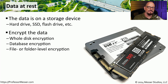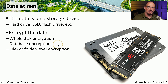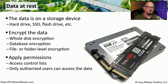Different types of data at rest encryption include encrypting the entire disk using full disk encryption. You might encrypt just one part of a database or an entire database of information, or you might encrypt individual files or folders in the file system of that operating system. In most cases, we're applying different security policies to the data stored on these devices. For example, we might create access control lists, or ACLs, that determine what users have access or no access to a particular type of data.